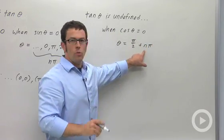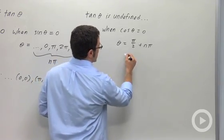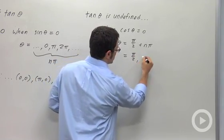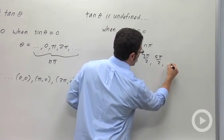So this would be for example, pi over 2, 3 pi over 2, 5 pi over 2, and so on.